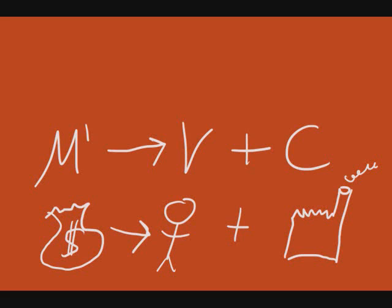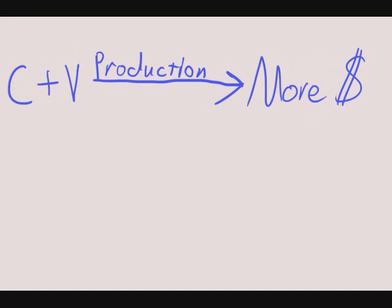The capitalist spends M prime on variable capital and constant capital. The only reason the capitalist does this is so that workers will work with the tools and machines on the raw materials to make commodities, which he can then sell for more money than he started with. The point for the capitalist is to make more money than what you start with, and for every production cycle to do this again and again. This difference between what you start with and what you end with in a production cycle is called surplus value.